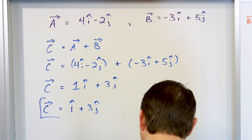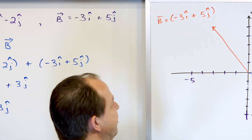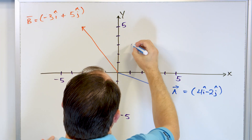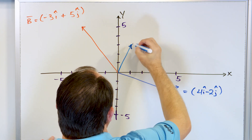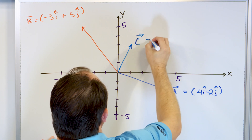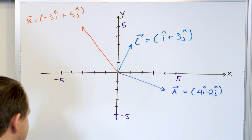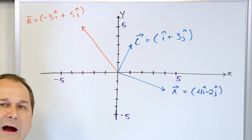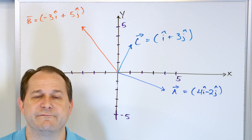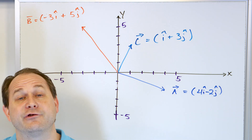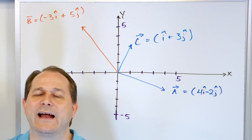Now let's draw vector C. C is i plus 3j, meaning x = 1, y = 3, so it stops at coordinates (1, 3). I draw the vector up there — vector C is i plus 3j. Now we've drawn all three. We're trying to convince ourselves that the vector C we calculated actually is the addition of vectors A and B.